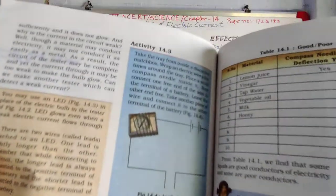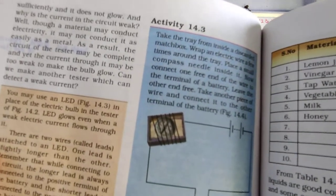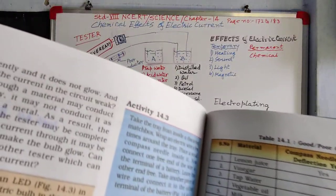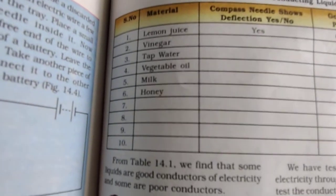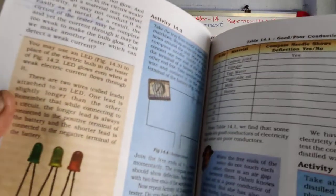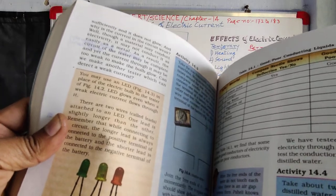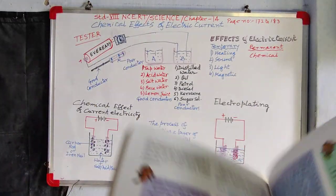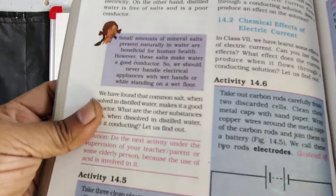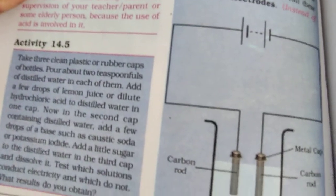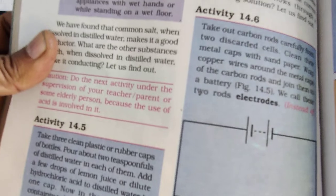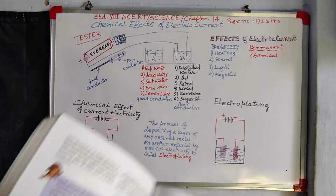And this is the magnetic tester. This is the list of good conductors and bad conductors in liquid. And this is the diagram of the chemical effect of electric current. Now let us discuss this diagram of chemical effect of electric current.